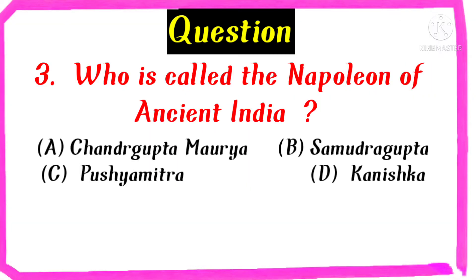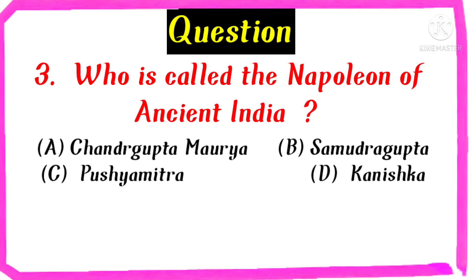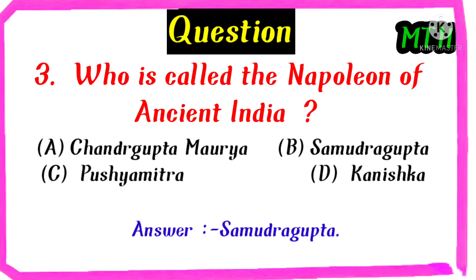Who is called the Napoleon of ancient India? Chandra Gupta Moriya, Samudra Gupta, Pushyamitra, Konishka. The right answer is Samudra Gupta.